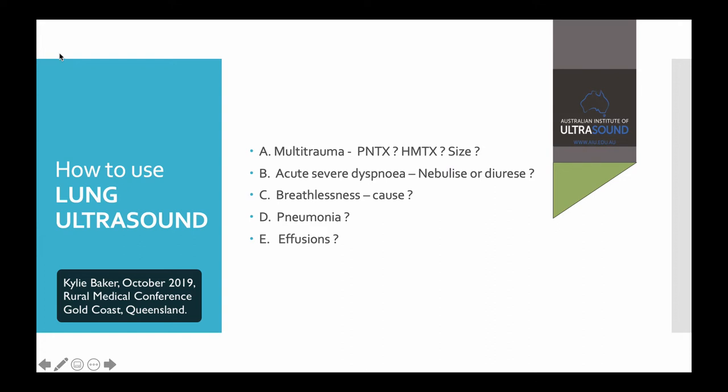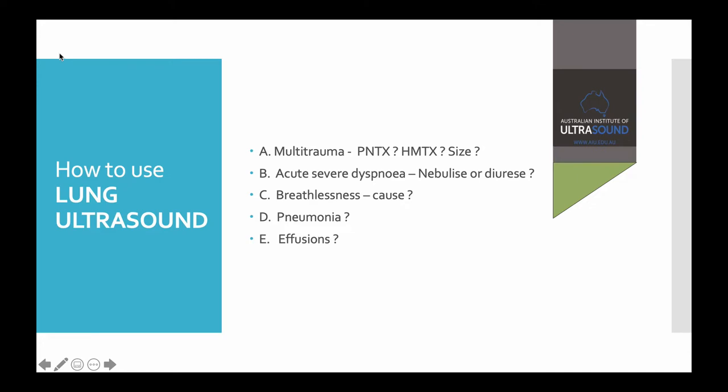If you ask an emergency physician how they use lung ultrasound, a lot of them will say they just use it for pneumothorax. This scares me a little because I think this is one of the hardest uses. The kindergarten stuff is the acute severe dyspnea when you're looking for B-lines. A little bit harder perhaps is the more complicated breathlessness cases where you employ your BLUE protocol. It's quite easy to look for localized pneumonias and other consolidations, and we are really very good at effusion.